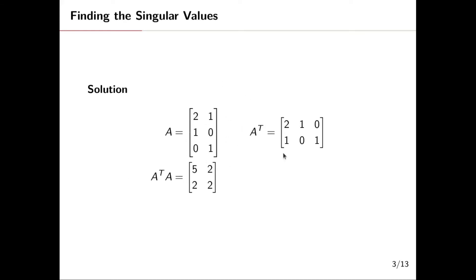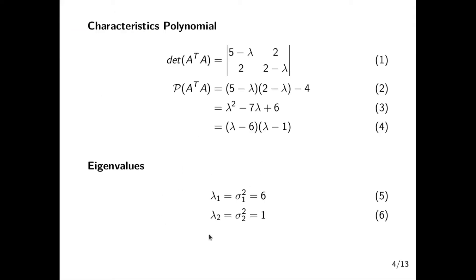We first have our matrix A and its transpose, and then we compute AᵀA to get this two by two matrix. From there we find the determinant of that matrix.